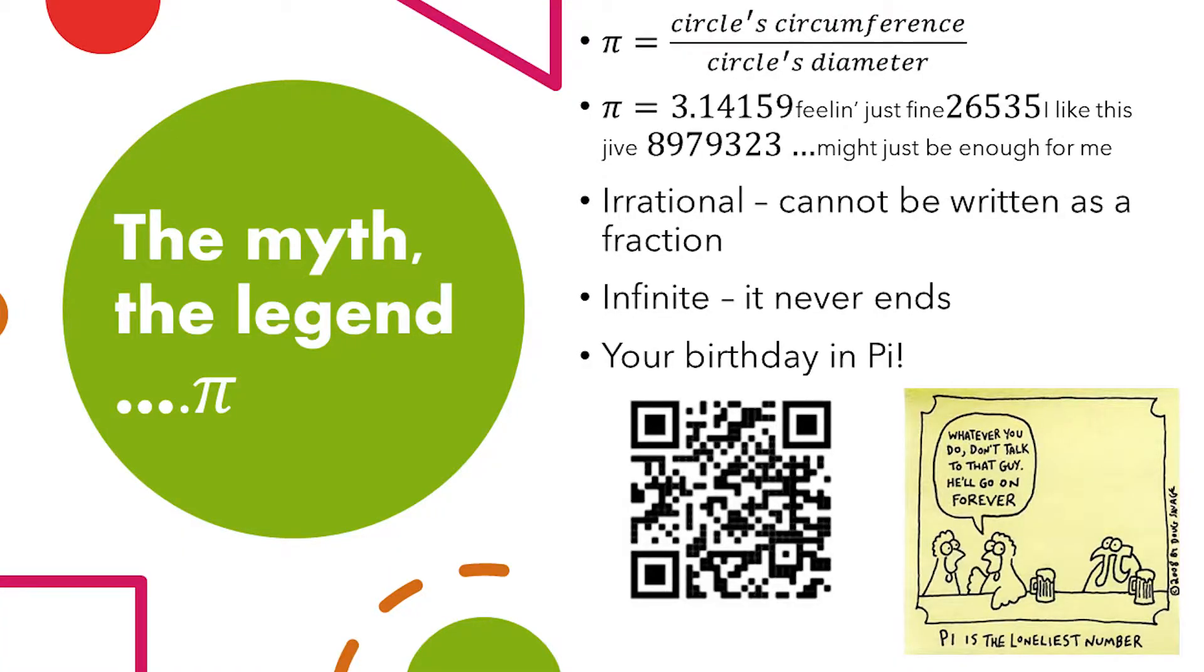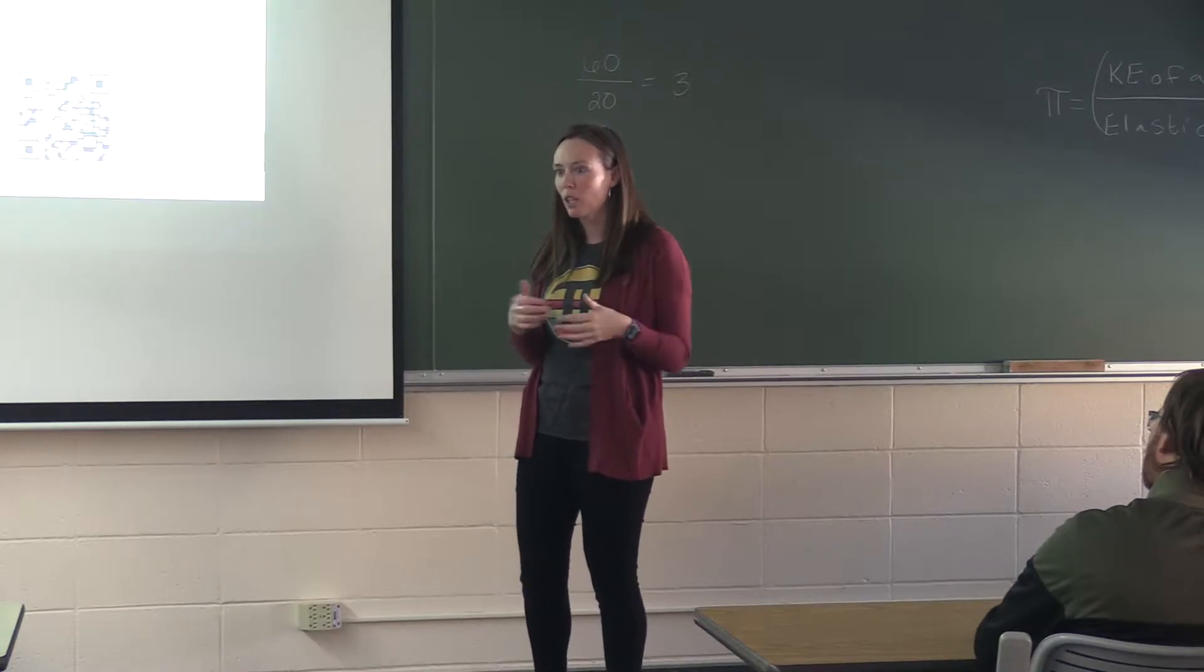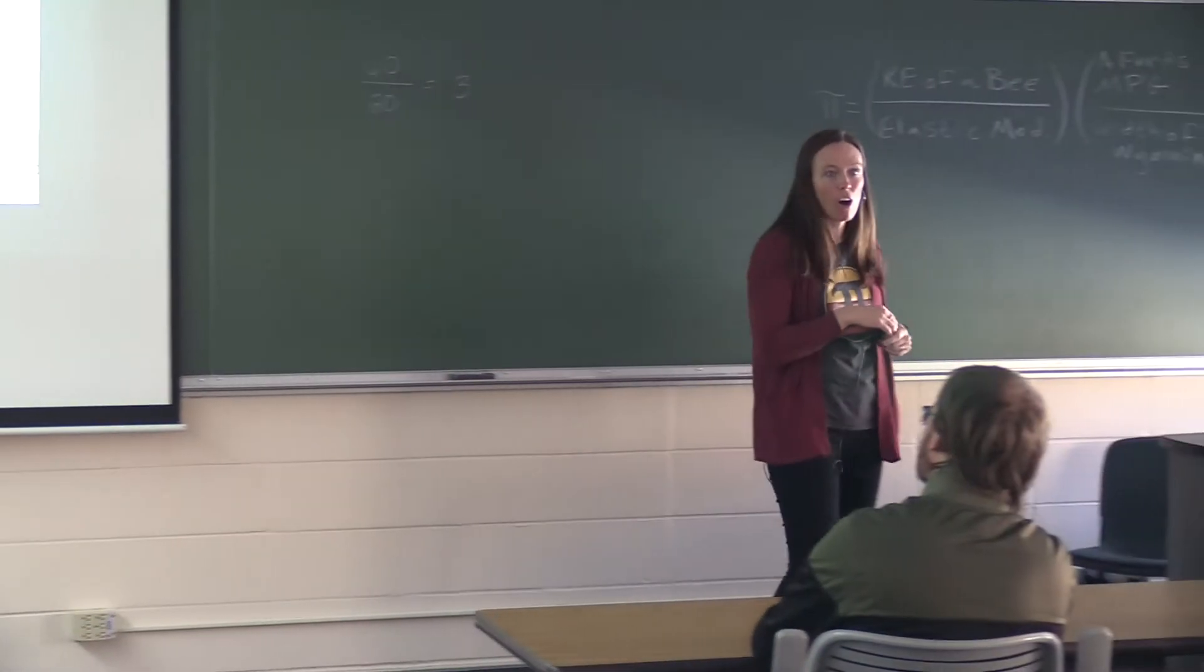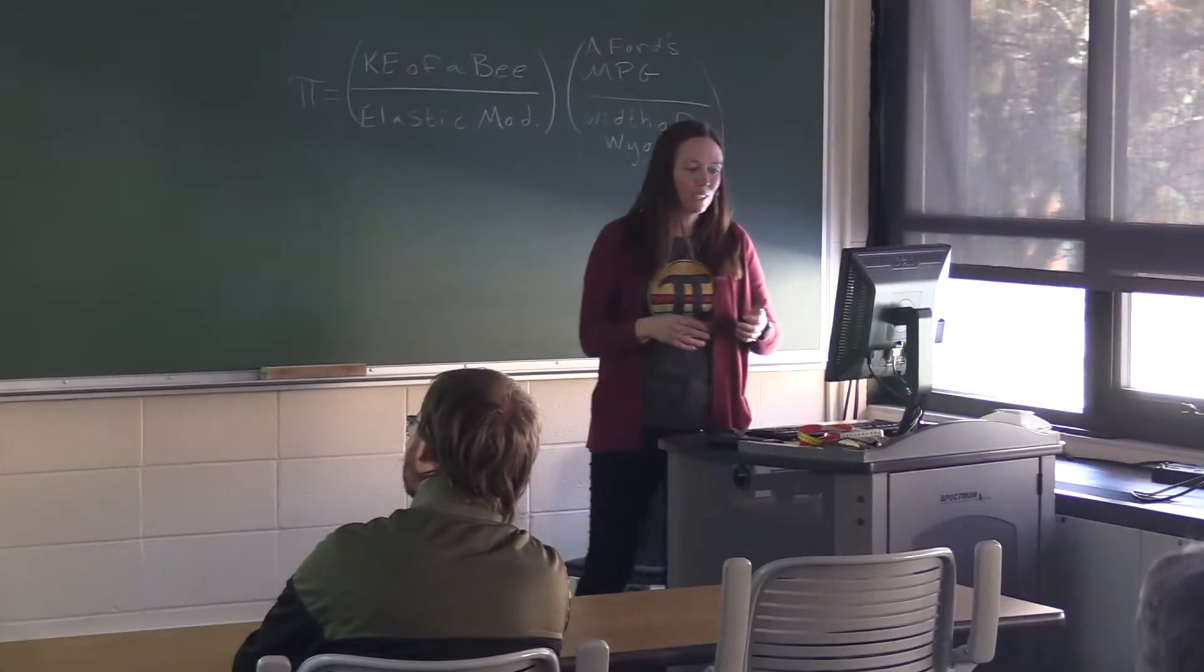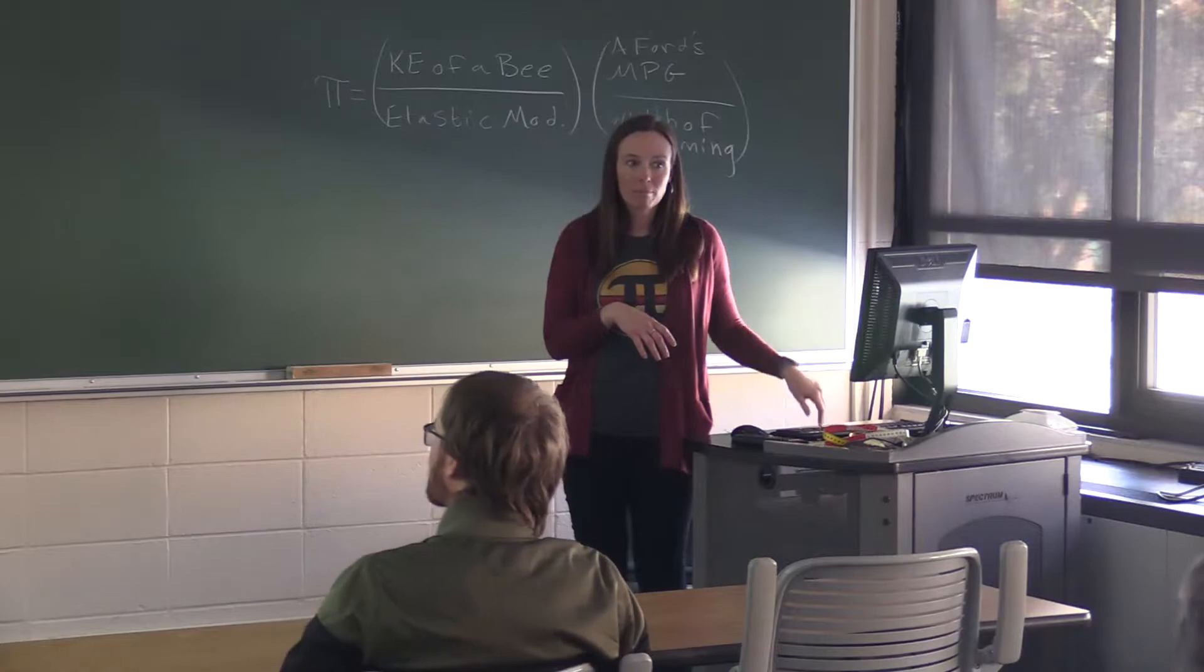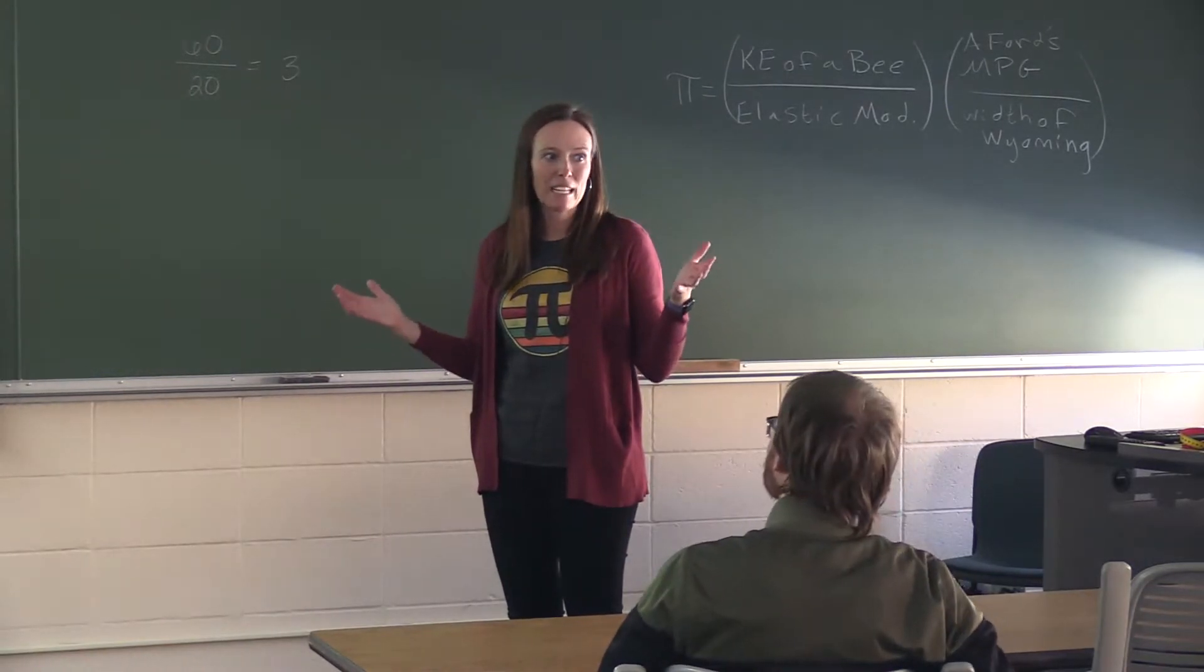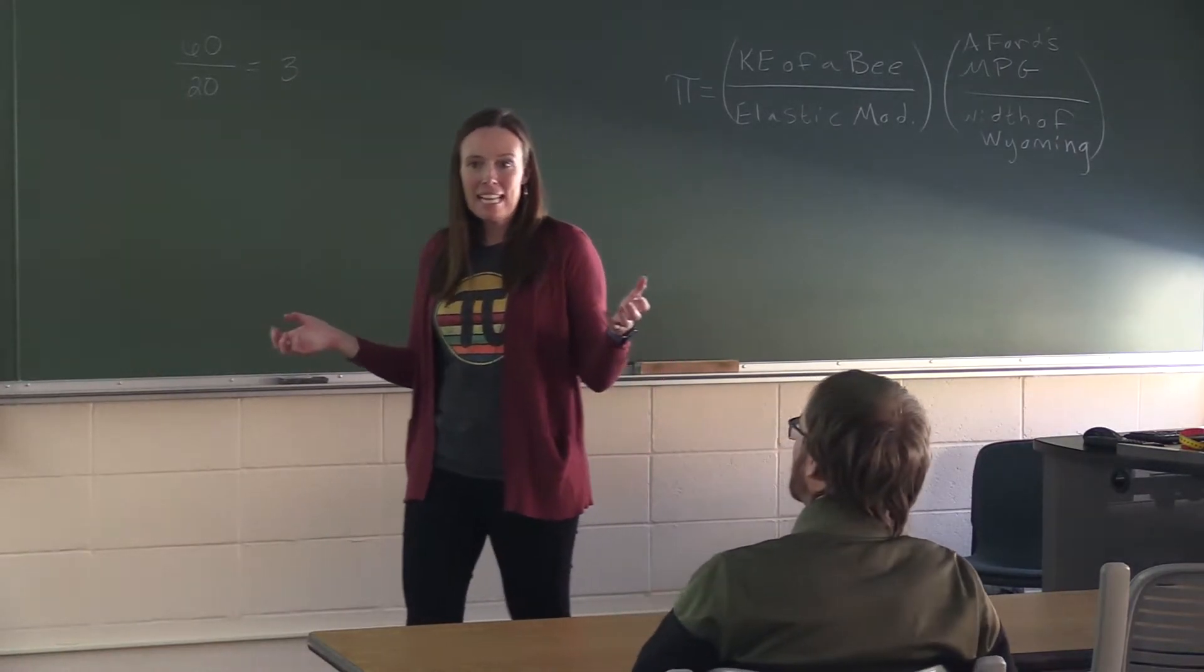It's about 3.14159. We're feeling just fine. 26535. I like this jive. 8979323. It's going to go on. How far? For eternity. So this is an irrational number. So mathematicians, what's the difference between an irrational number and a rational number? Cannot be written as a fraction. Things that are rational can be written as fractions. But an irrational number is something that could not be written as a fraction, and pi is a very good example.